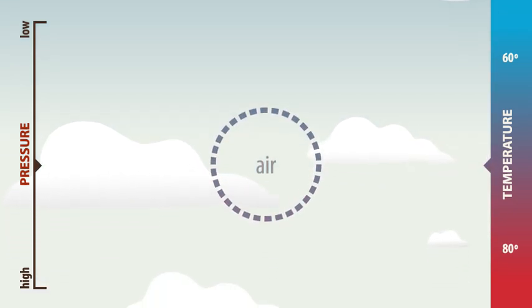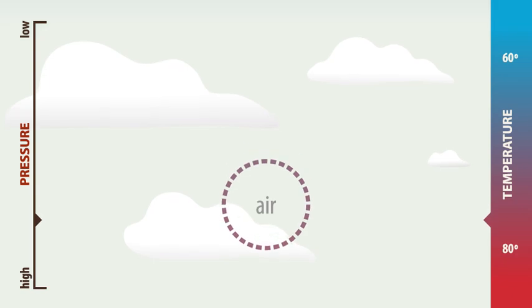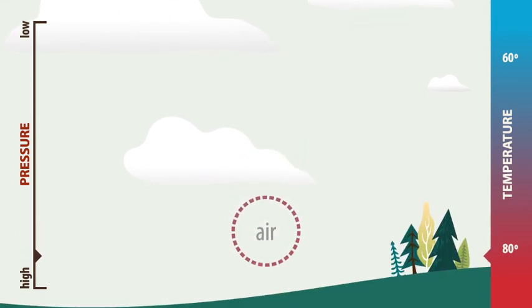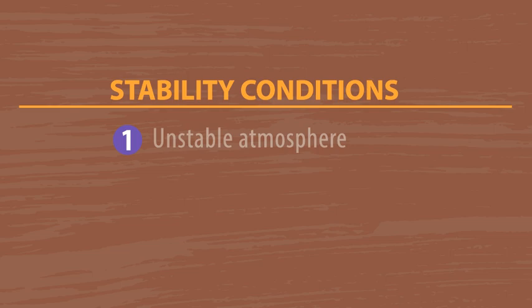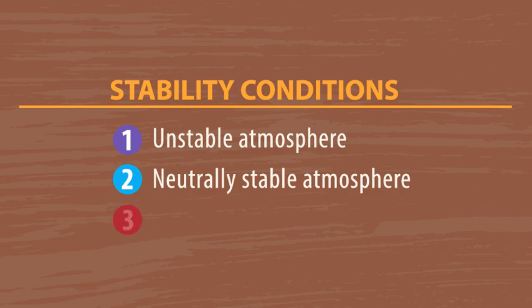These concepts play a huge role in many of the weather factors to consider on the fire line. There are three basic stability conditions: one, unstable; two, neutrally stable; and three, stable. These conditions can occur as layers in a variety of combinations as you go up in the atmosphere.